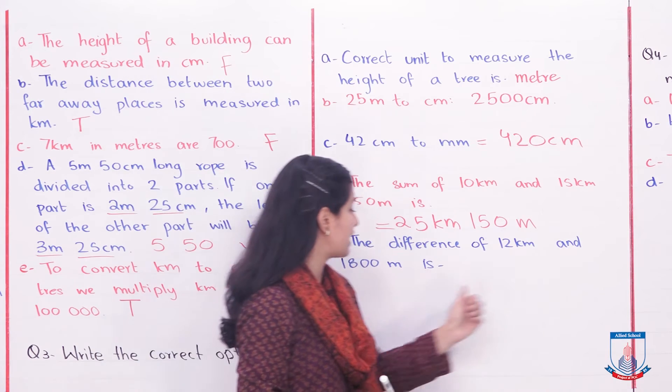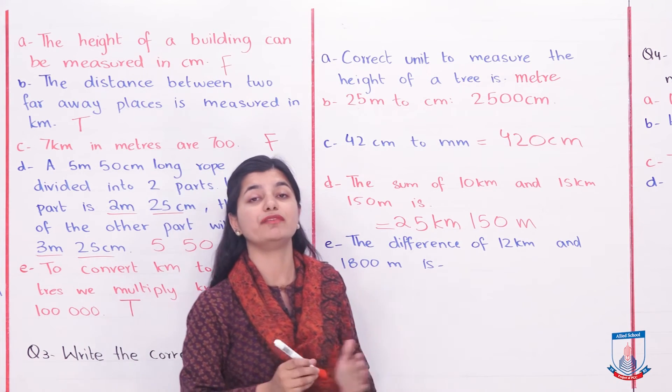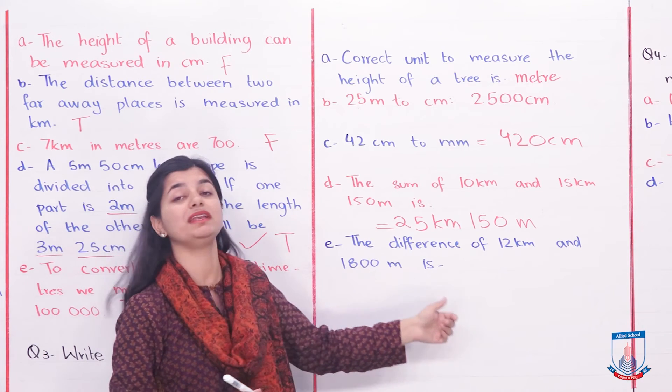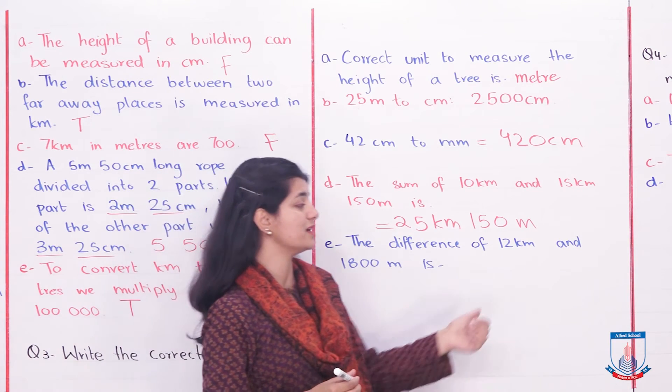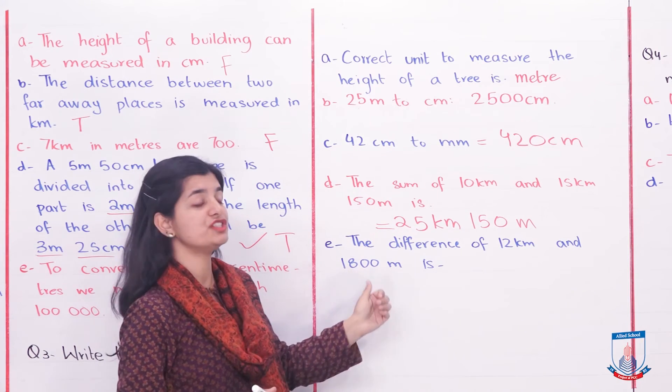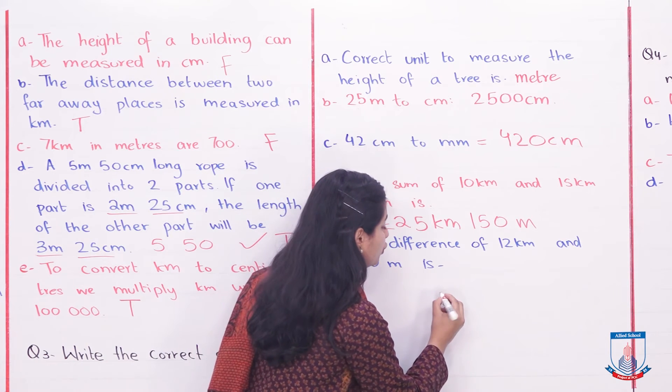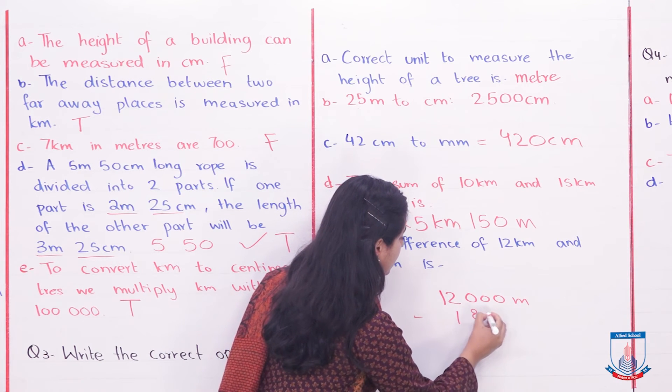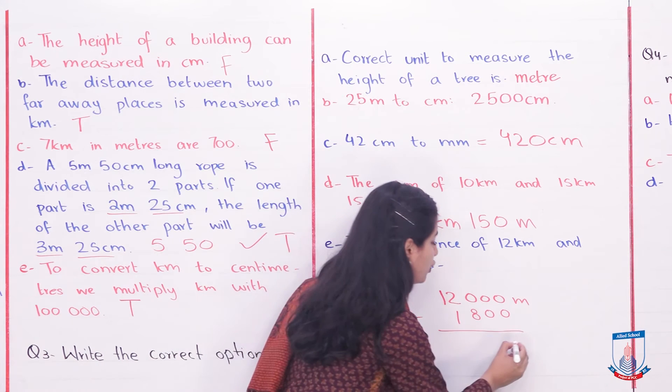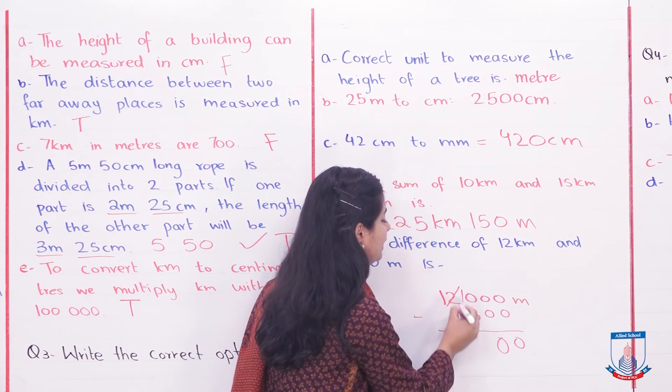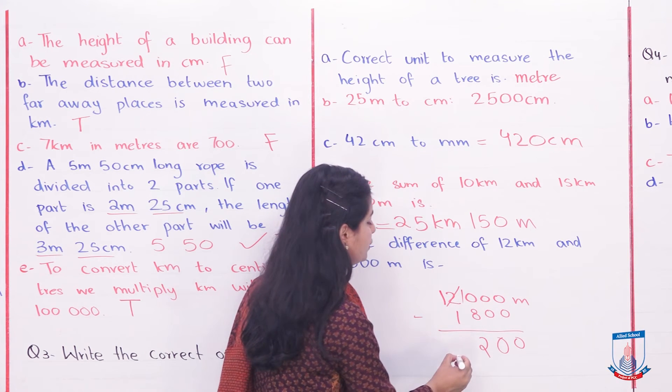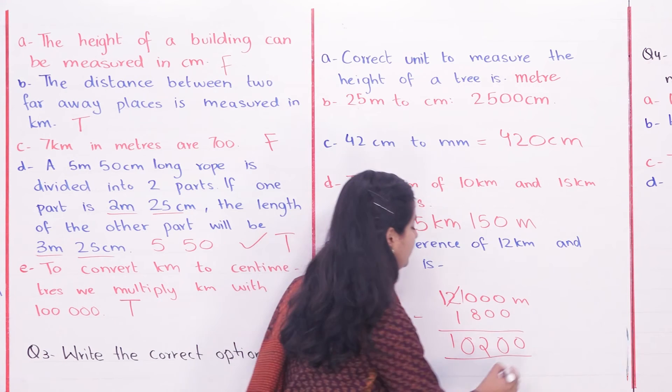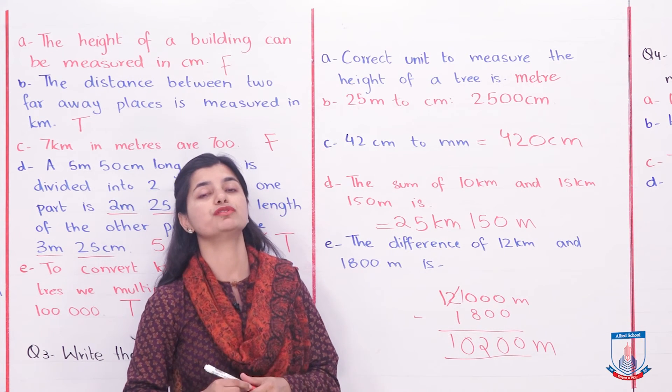Part E: The difference of 12 kilometers and 1800 meters. We have to subtract but both values are in different units. We can convert 12 kilometers to 12,000 meters minus 1800 meters. Working it out: 0 minus 0 is 0, 0 minus 0 is 0, 1 carry, 10 minus 8 is 2, and we get 10,200 meters as our answer.